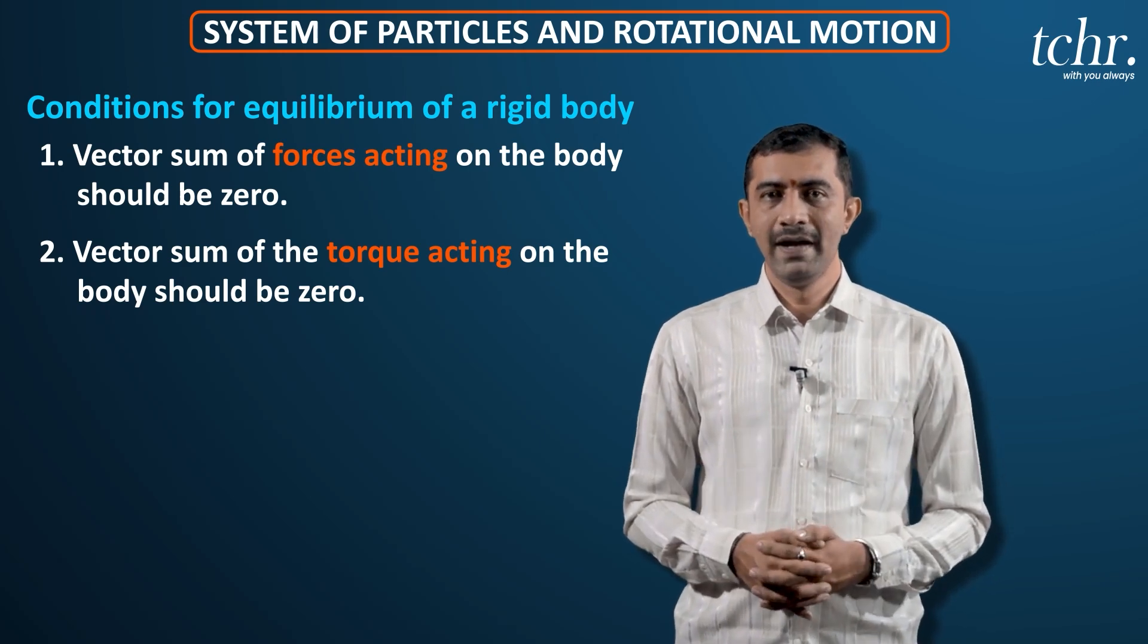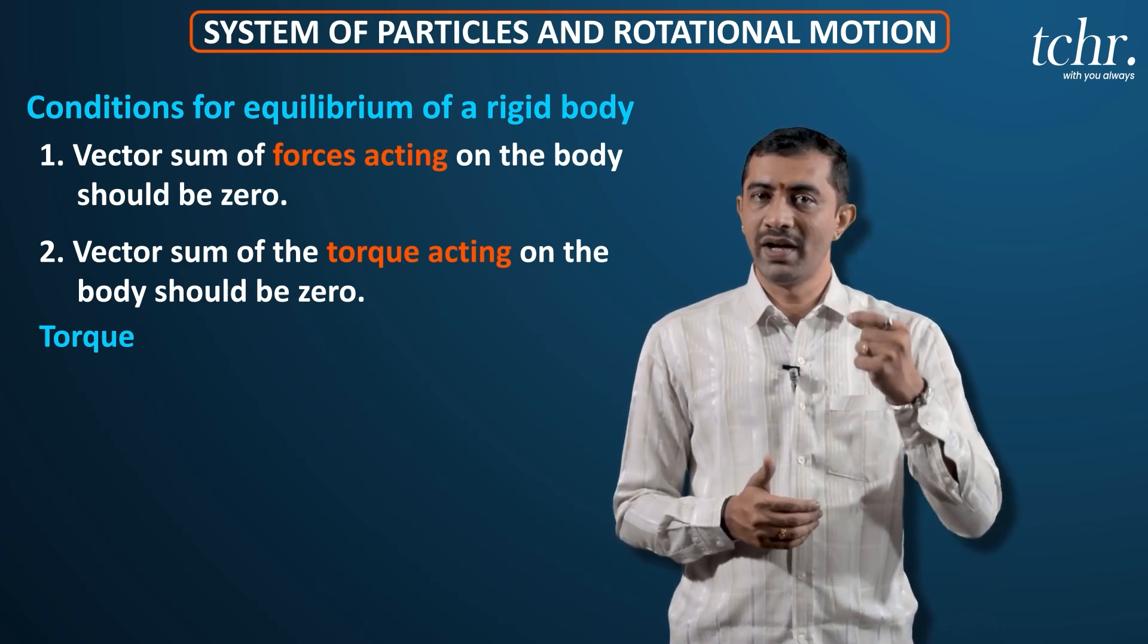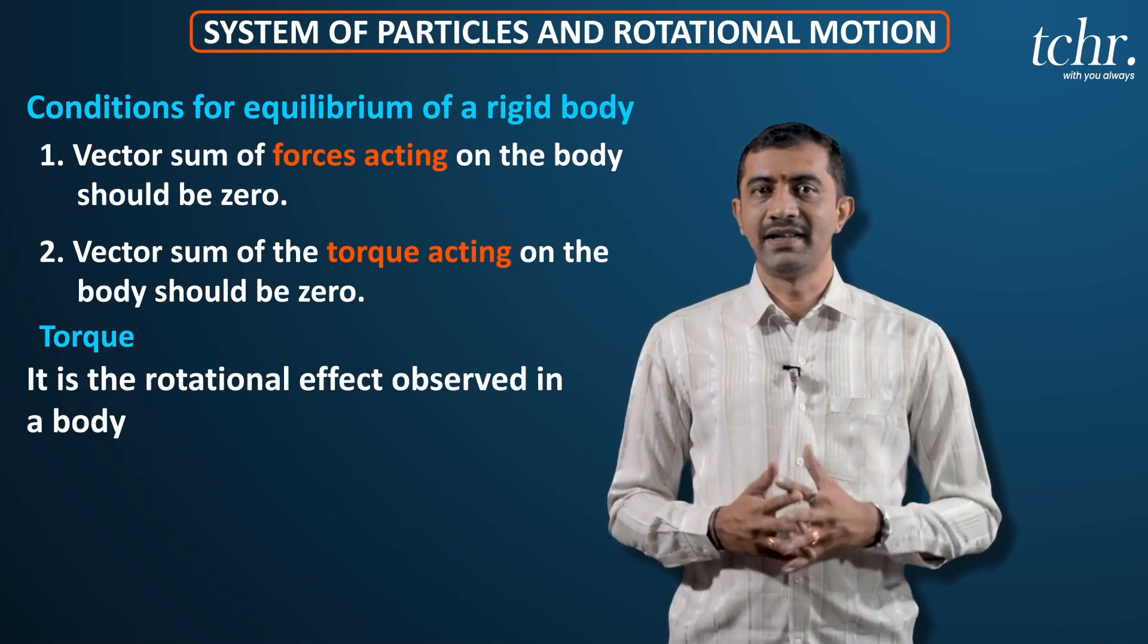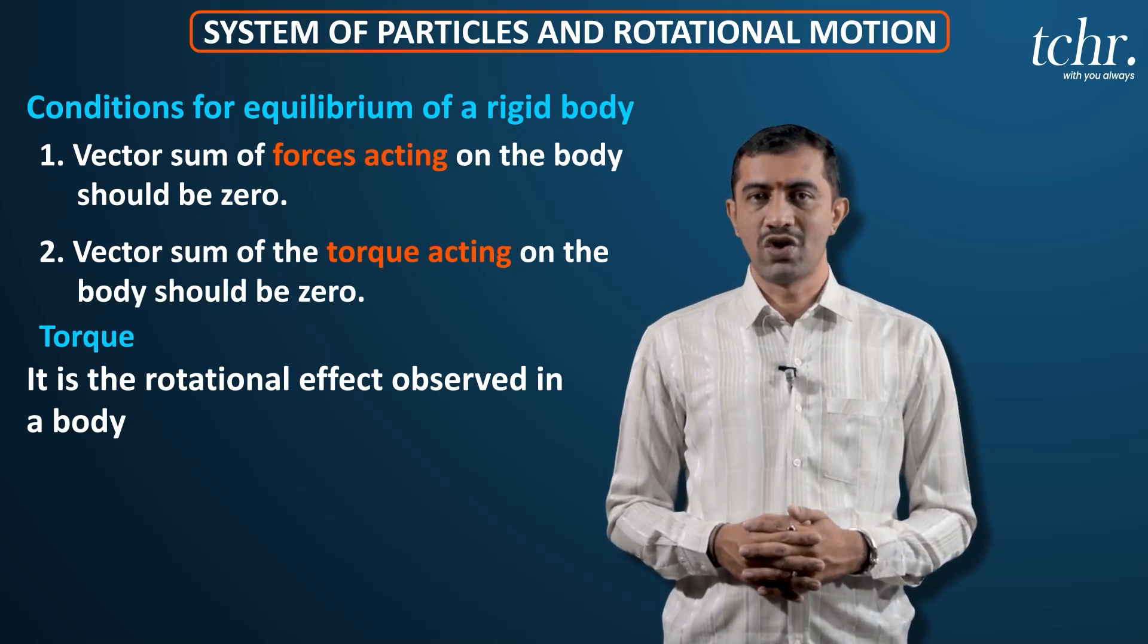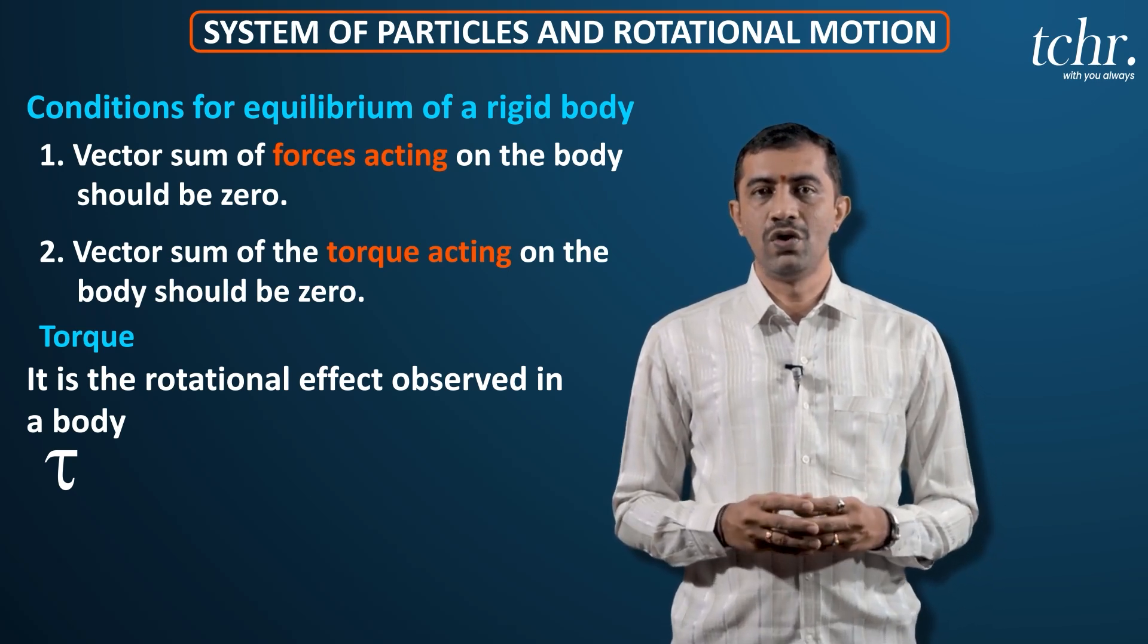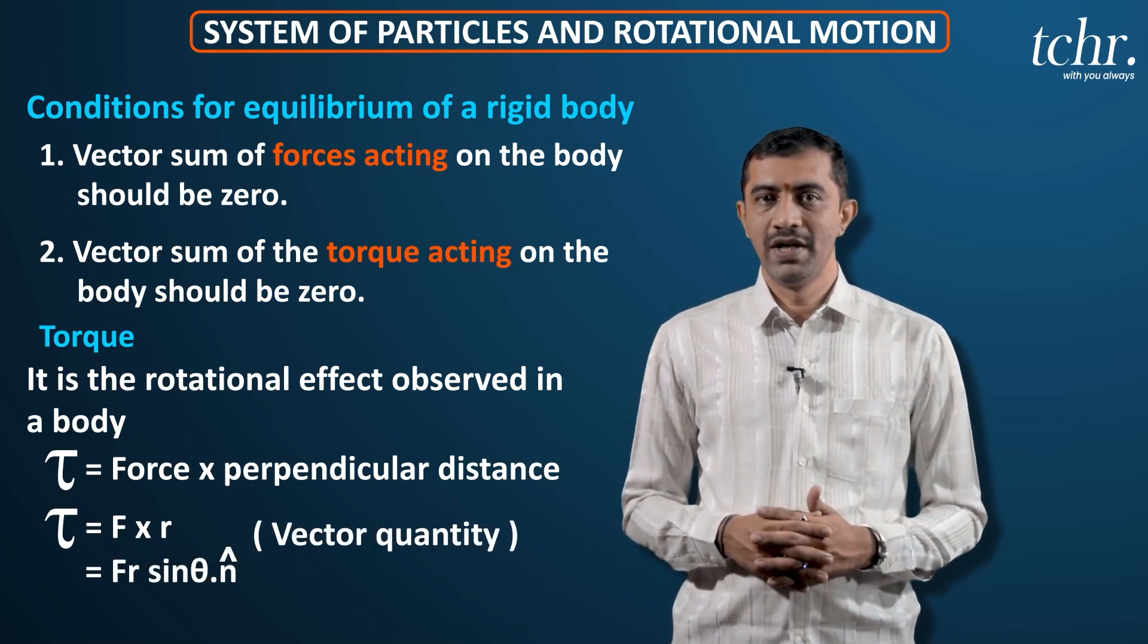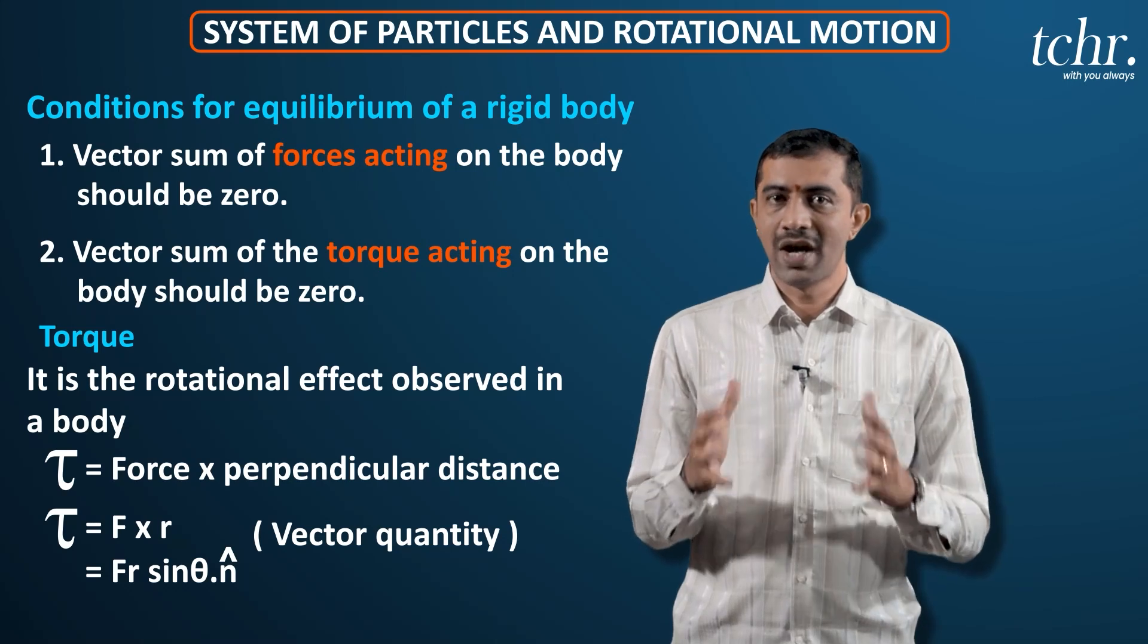The vector sum of torque acting on the body should be equal to zero. Force M into A. Torque - when you apply force on a rigid body which is fixed at one end, it tries to execute a part of a circle or complete circular motion. Rotational effect. Rotational effect I call it as torque. Rotational effect observed in a body is called torque. It is denoted by tau which is the cross product of force and the perpendicular distance F cross R or which is equal to FR sine theta into N cap. Vector quantity. So torque calculates the rotational effect observed in a body.